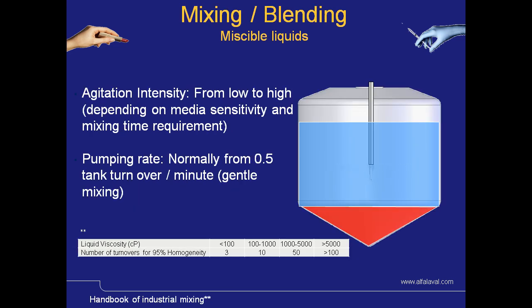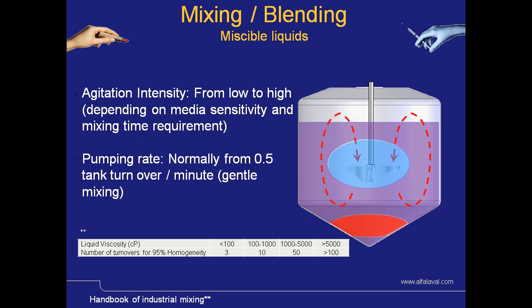When it comes to mixing tasks, the amount of agitation required can be related to the viscosity of the product. This will then dictate the pumping rate, normally around 0.5 tank turnovers per minute for gentle mixing. But as you can see from the chart, the viscosity of the liquid has a very distinct effect on the number of tank turnovers, and therefore dictates the speed and pumping rate for agitation.